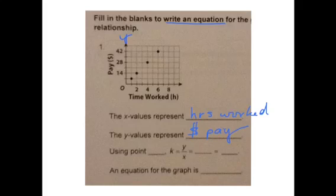So pick any point, let's pick this point right here, we'll pick point two comma fourteen, and find k, y over x, so fourteen is my y value over my x value of two, gives me a seven.